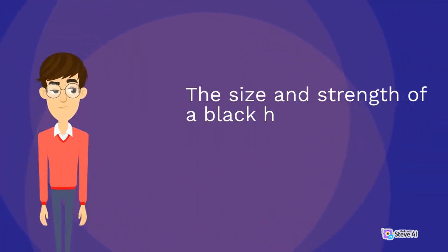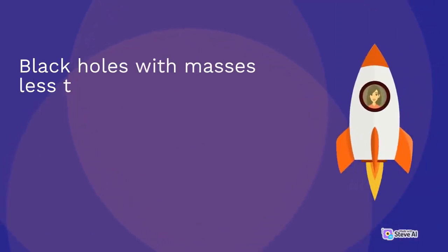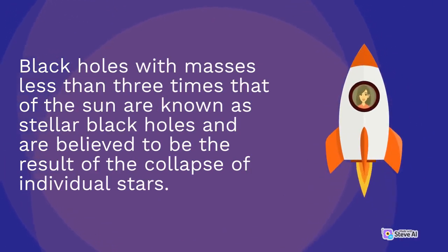The size and strength of a black hole's gravitational field depend on its mass. Black holes with masses less than three times that of the Sun are known as stellar black holes and are believed to be the result of the collapse of individual stars.